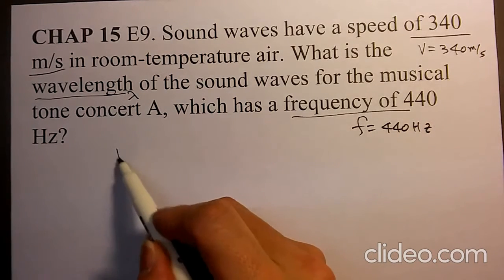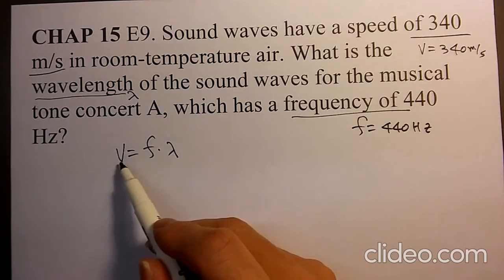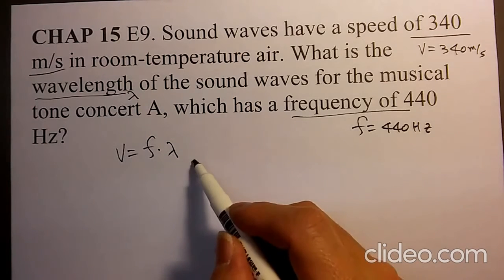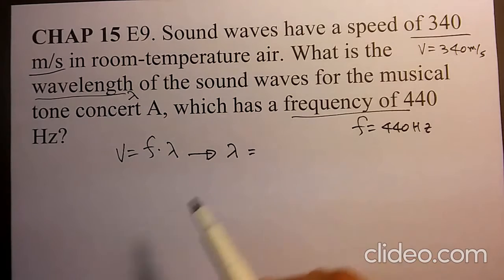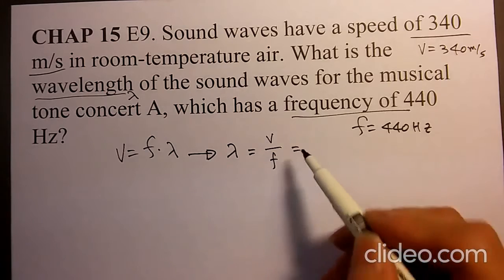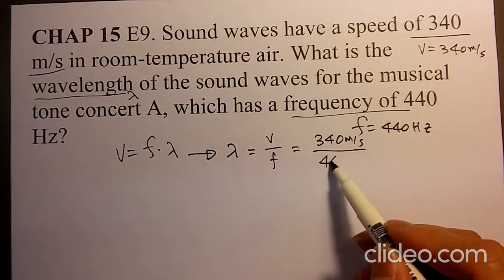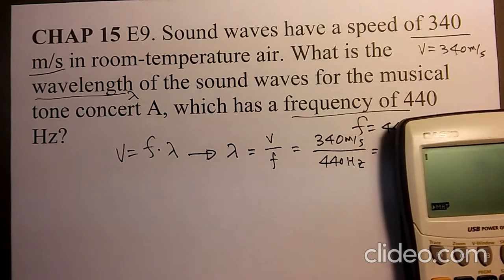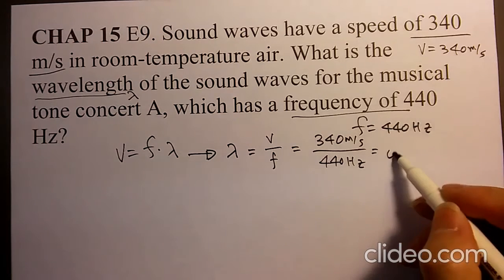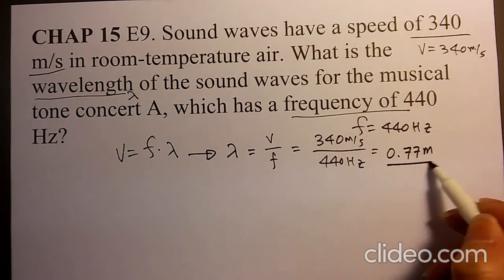In order to solve this, V equals F times lambda. Velocity equals frequency times lambda. You need to find lambda, the wavelength, which equals V over F. V equals 340 meters per second divided by frequency 440 hertz, giving 0.7727 meters as the wavelength.